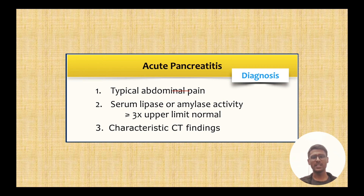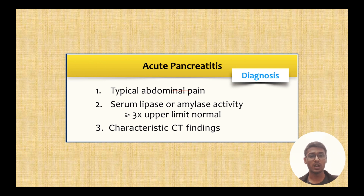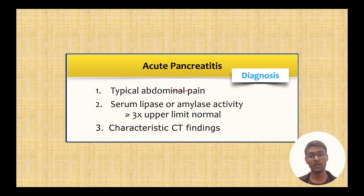You need at least two of three criteria. The first is typical abdominal pain — which is pain in the left upper quadrant or epigastric pain, not right upper quadrant pain. This is very important: acute pancreatitis patients present with pain in the left upper quadrant or epigastric region, not the right upper quadrant. The second criterion is enzyme level — always check lipase, because amylase sensitivity is lower than lipase.